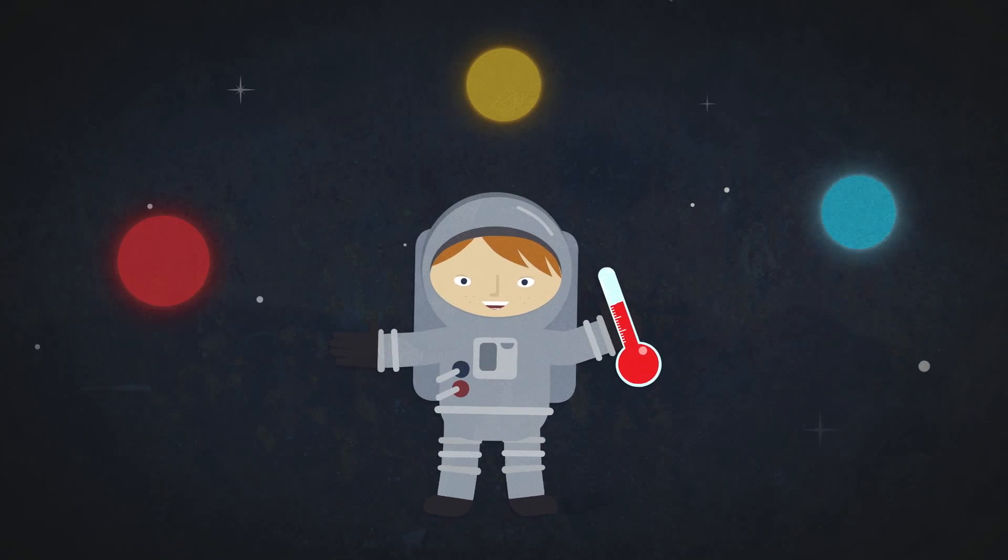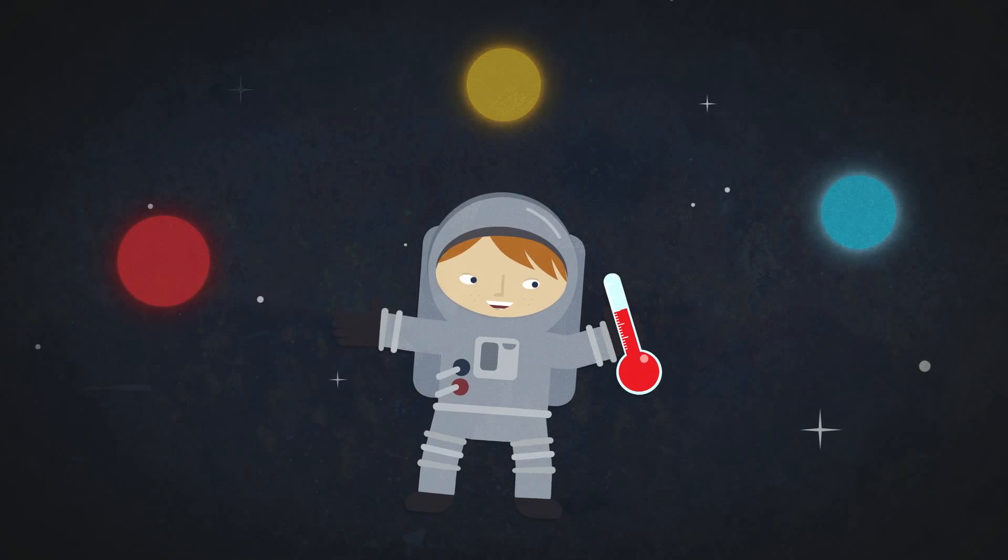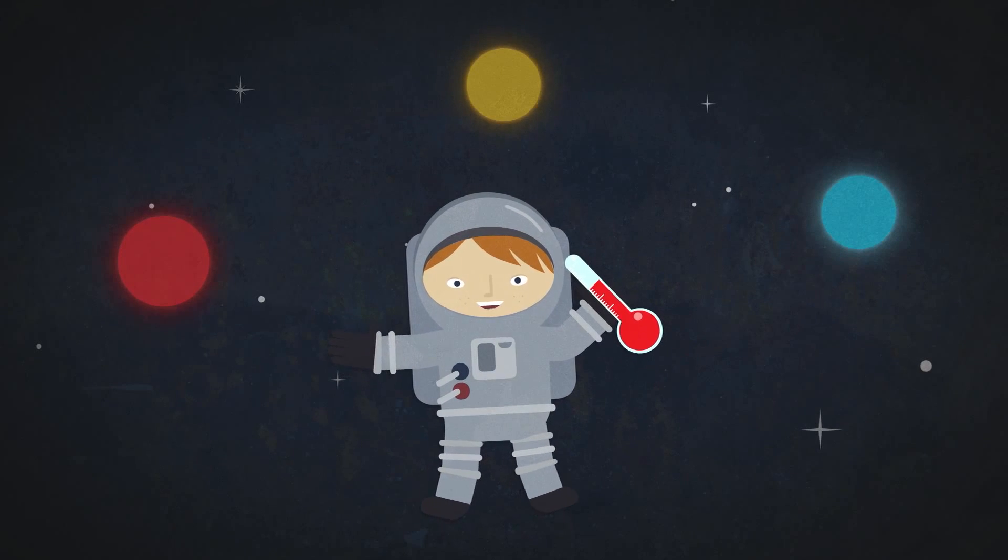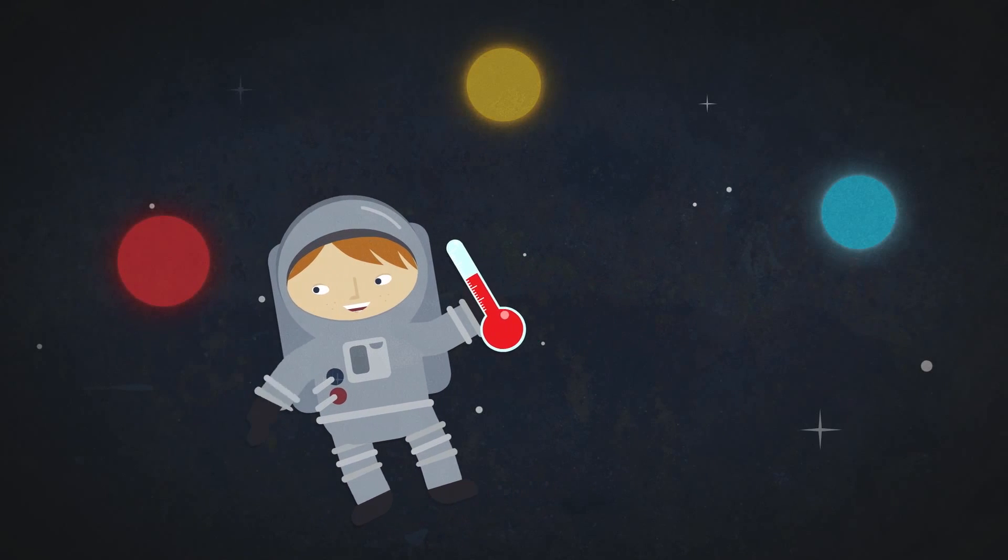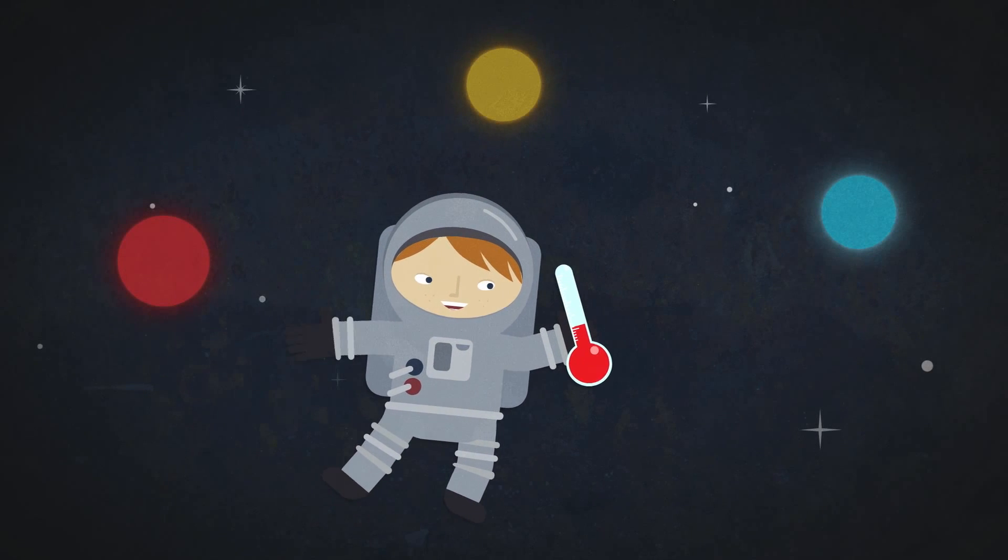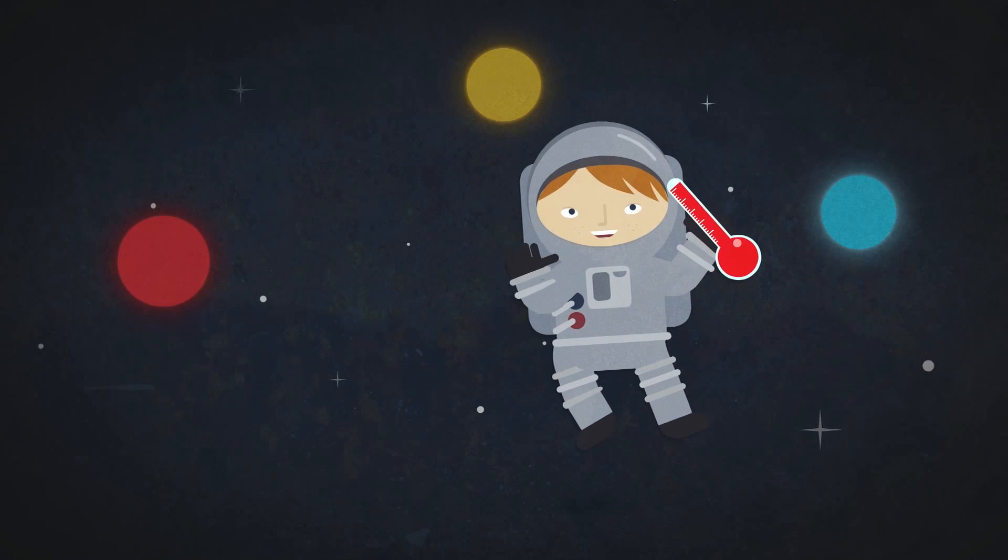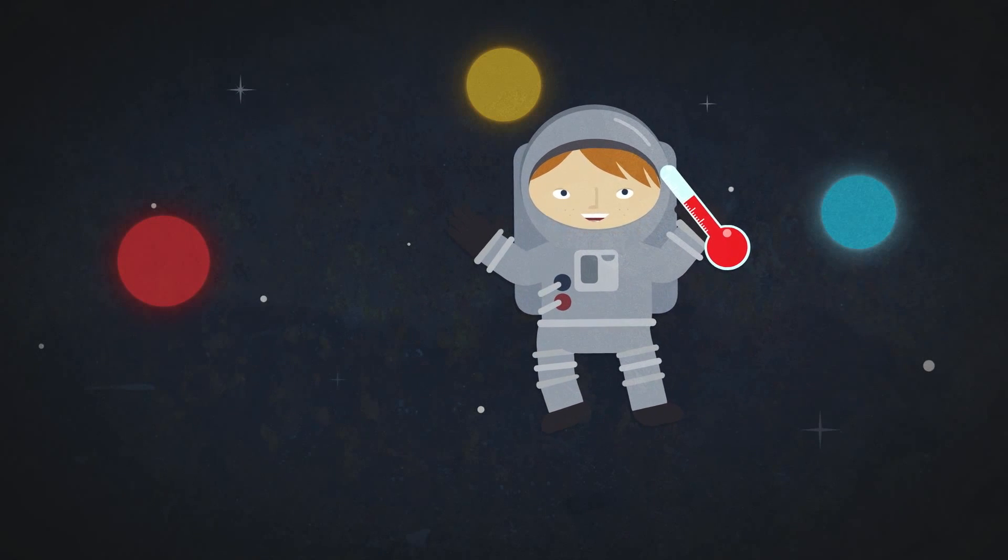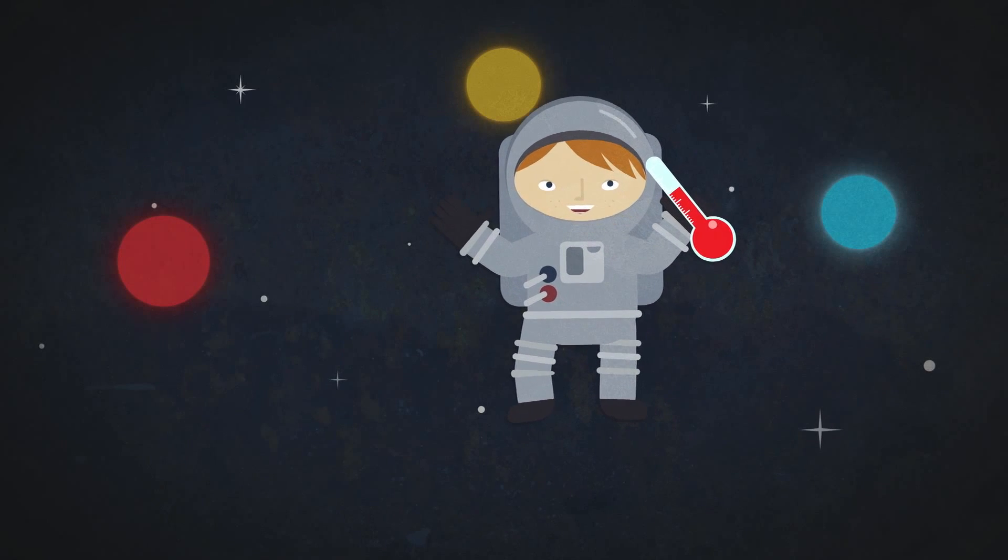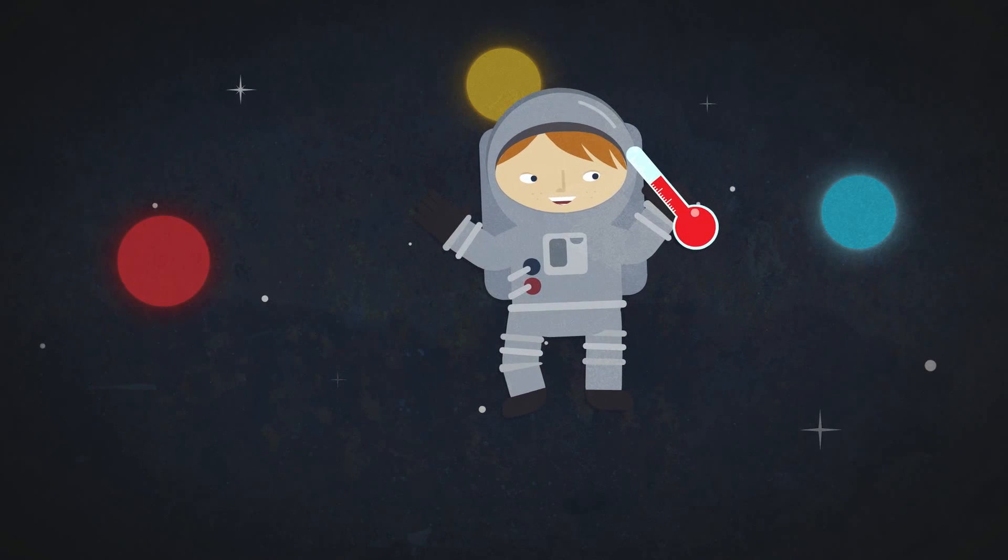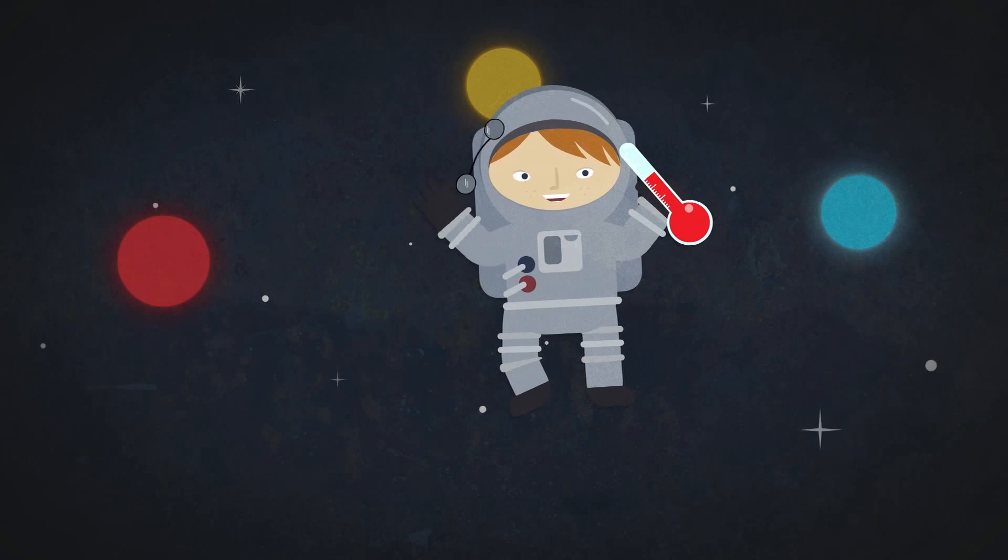And finally, there are no green stars in space. The colour of a star depends on how hot it is, with all that gas burning inside. Red stars are the coldest, blue stars are the hottest. And the star you know very well, the sun, is yellow, with a temperature that's somewhere in the middle. Just the right amount of heat to keep us toasty warm. Fact.